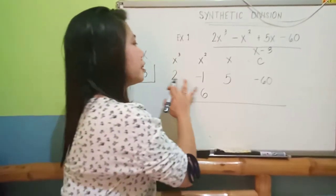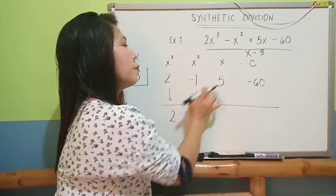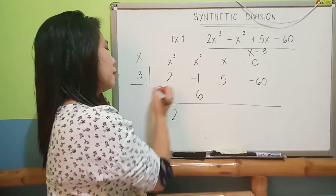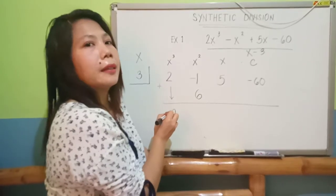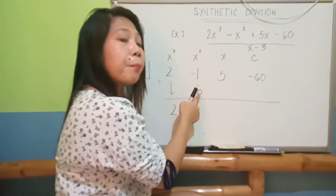Then, whatever the value here should be added. Add, multiply. Negative 1 plus 6 is positive 5.